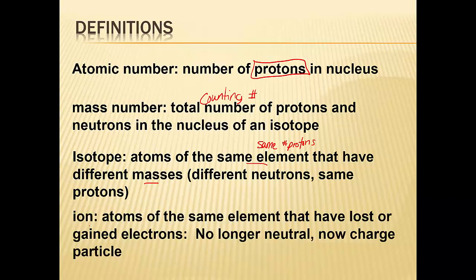Versus an ion — they have the same element, hence the same number of protons. But they've lost or gained an electron. Since an electron is negative, and you still have the same number of positive protons, you're going to change its charge. We will be spending a lot more time on ions, so right now just know that definition. The next unit is all about the electrons, so our focus in this unit is more with the isotopes, but that doesn't mean you need to forget this definition.